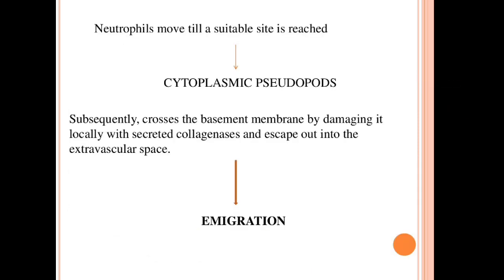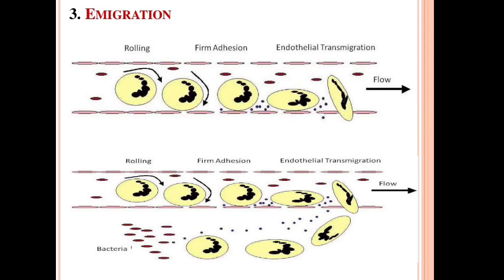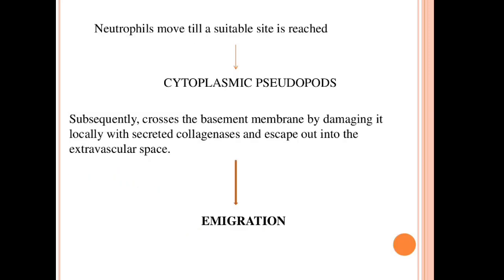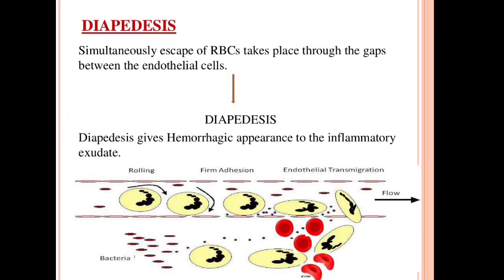Next is emigration. Leukocytes migrate and reach the site. Neutrophils extend cytoplasmic pseudopods, cross the basement membrane by damaging it locally with secreted collagenases, and escape out into the extravascular space. This is how neutrophils emigrate into the extravascular space.